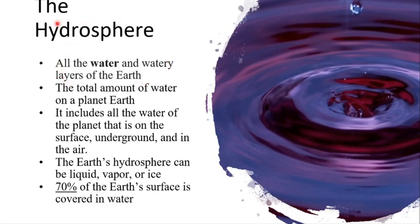All the water and watery layer of the earth is hydrosphere. Hydrosphere includes all the water content which is present on the planet earth. It includes the water on the surface, underground water, and the water present in the air. The water in hydrosphere can be in the form of liquid, vapor, or ice. 70% of earth's surface is covered in water.